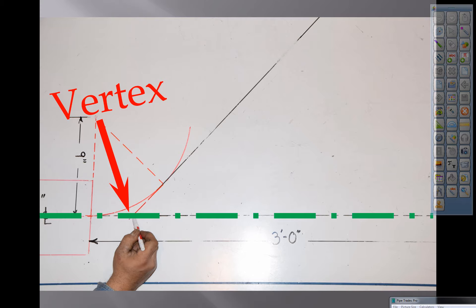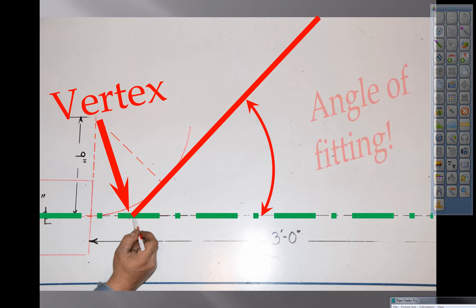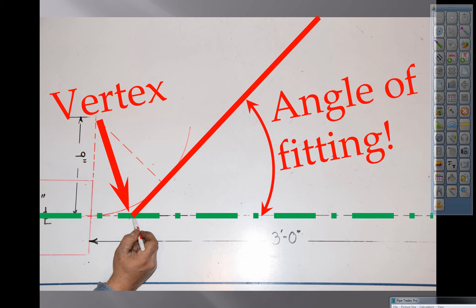That green line is where the pipe was going to be, the red line is where it's going to be when we're all done. That is your angle of fitting. That is your angle of fitting.